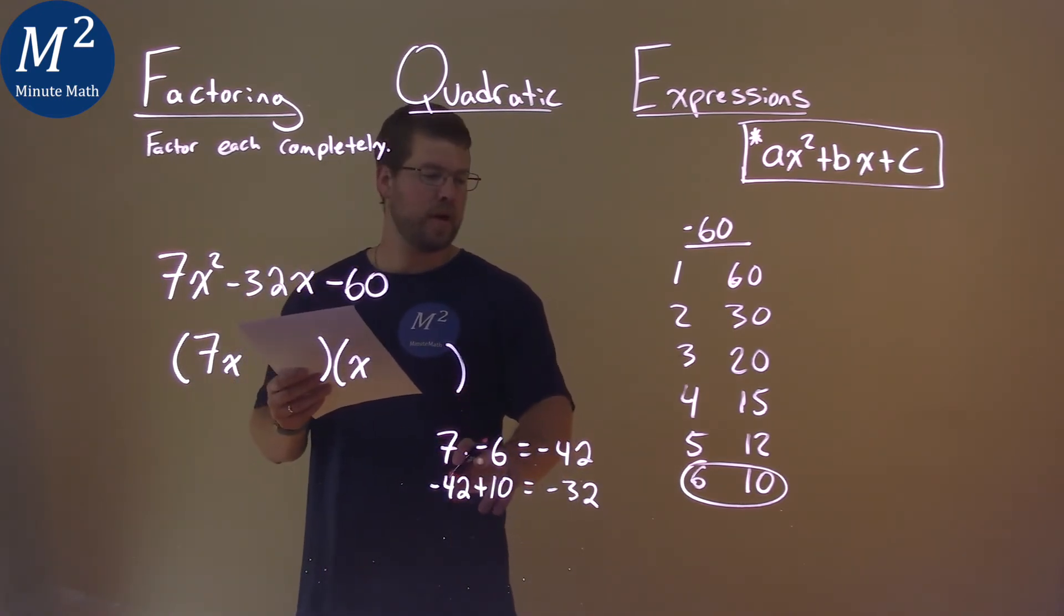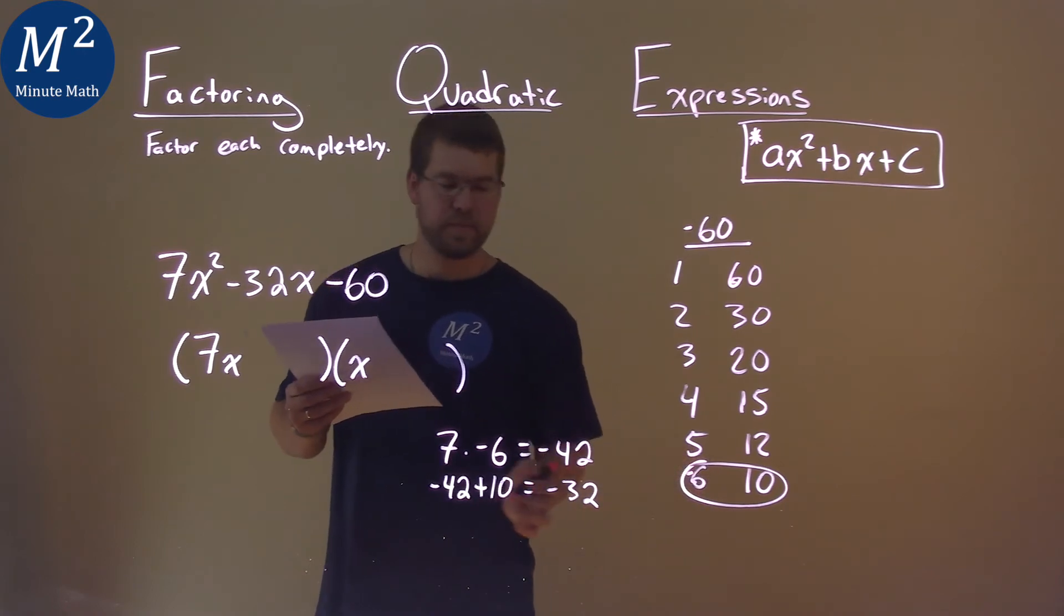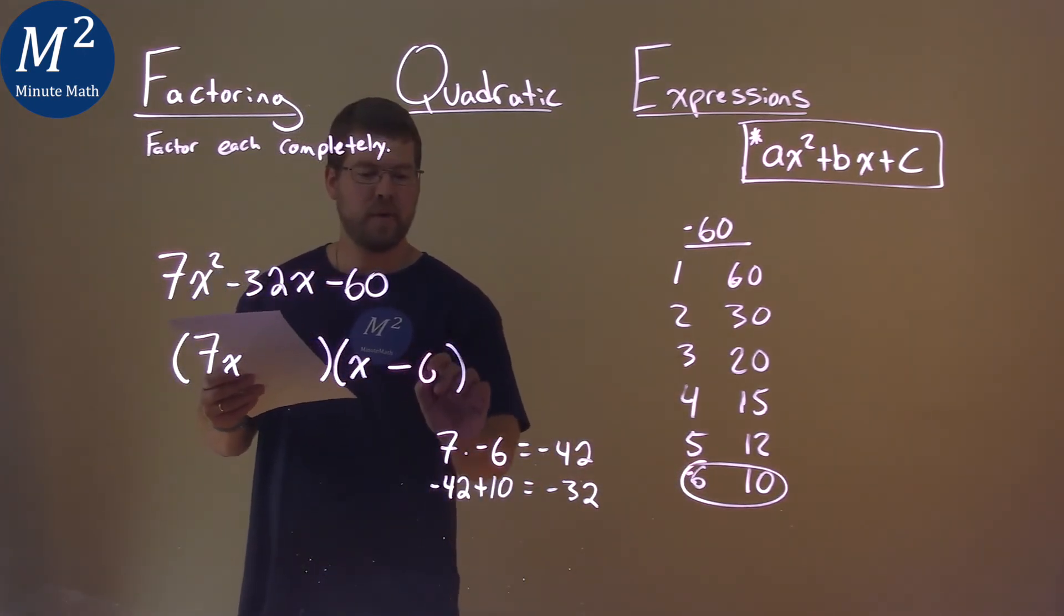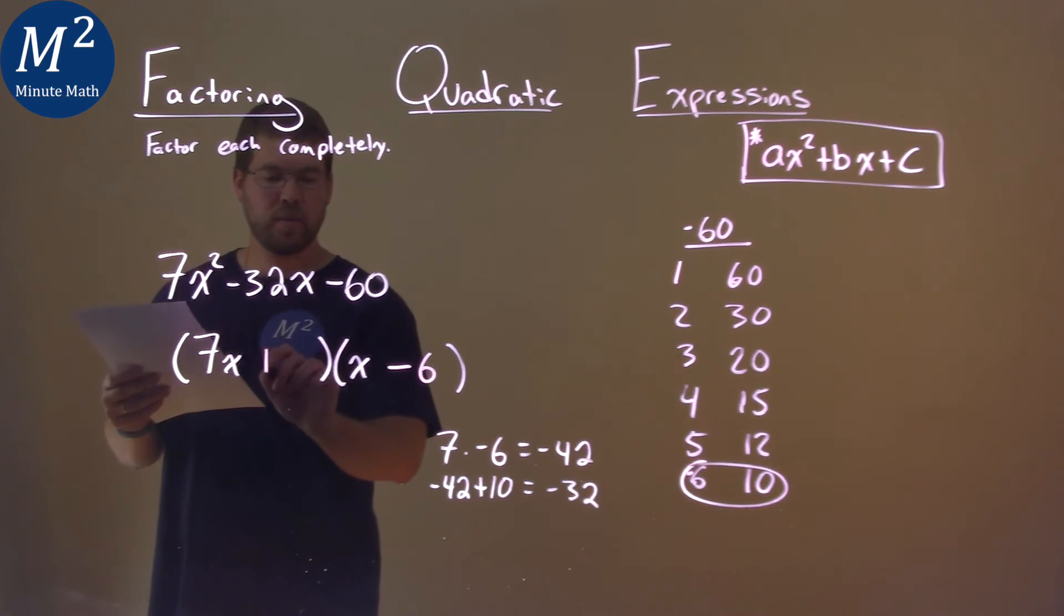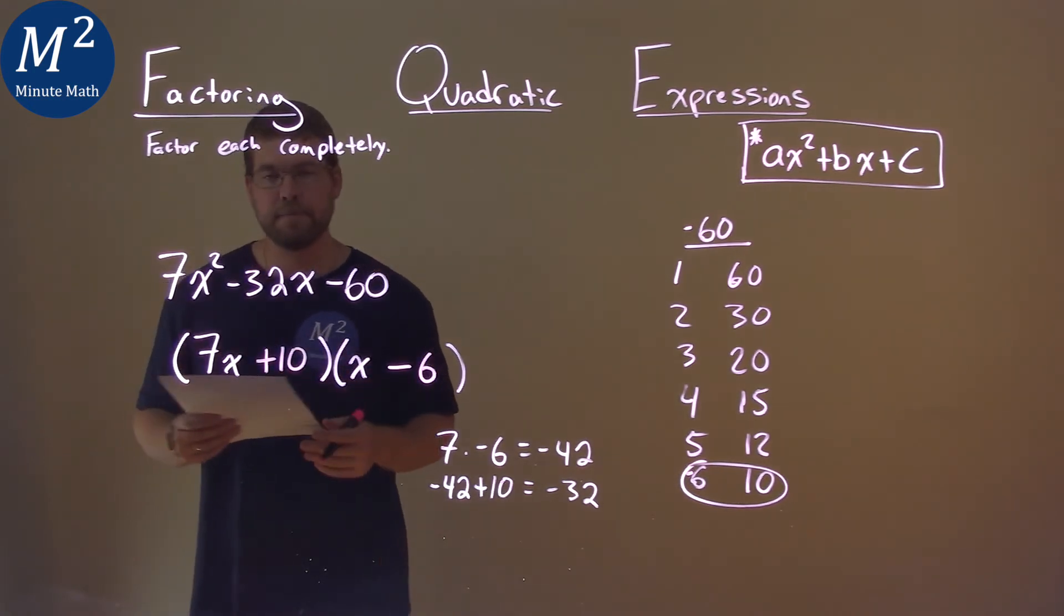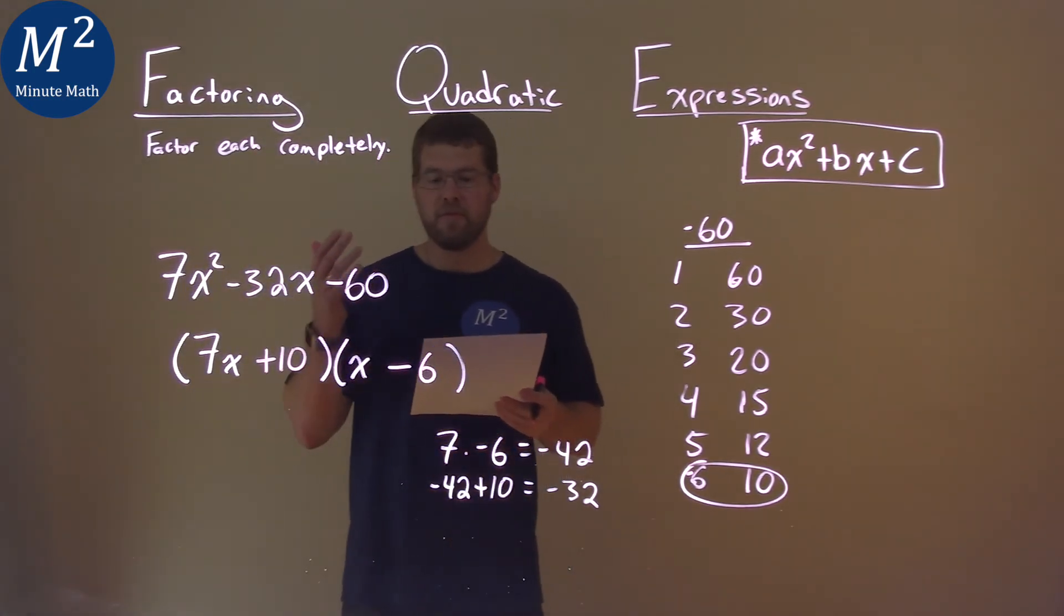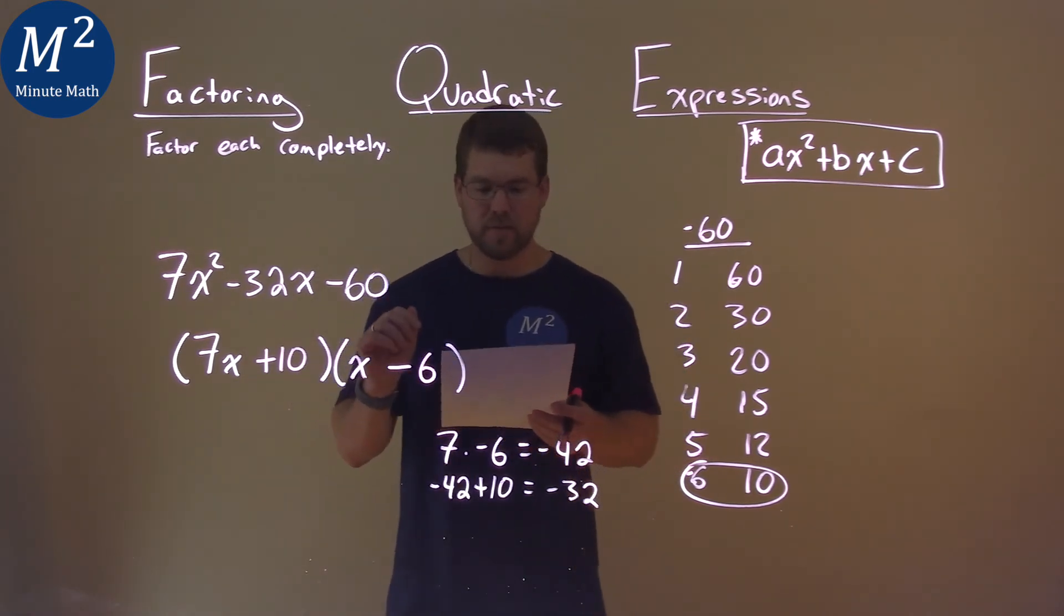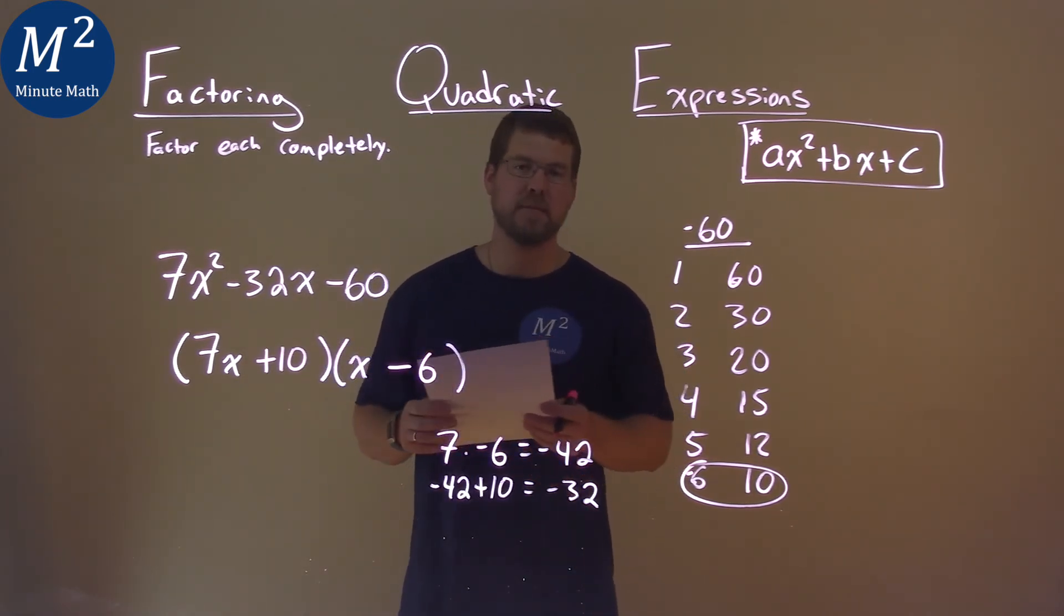So 7 has to be multiplied by the negative 6. So I'm going to put that negative 6 on this side, minus 6 here, and then I'm going to put the plus 10, the other pair, here. And so now we have our final answer in factored form: 7x plus 10 times x minus 6.